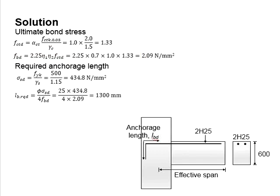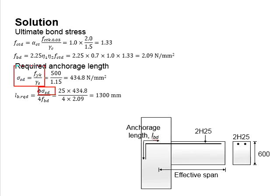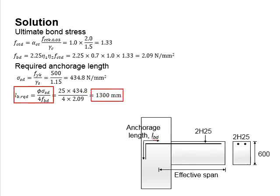Next, we determine the basic required anchorage length. It is a function of the design tensile strength of the steel, calculated based on the equation shown, and also the ultimate bond stress. The basic anchorage length required is found to be equal to 1,300 mm.